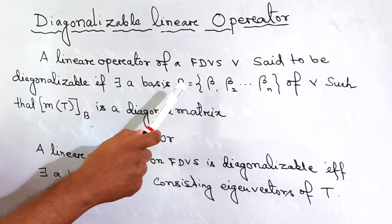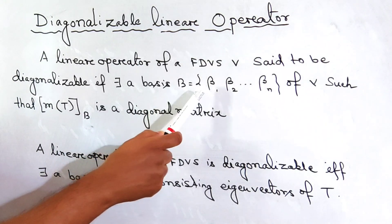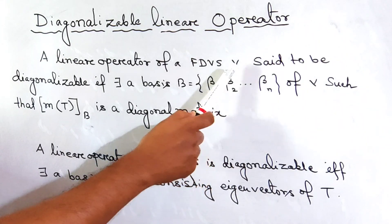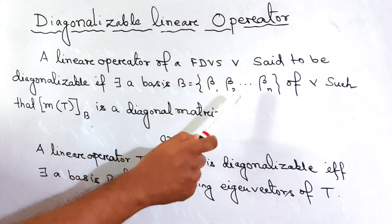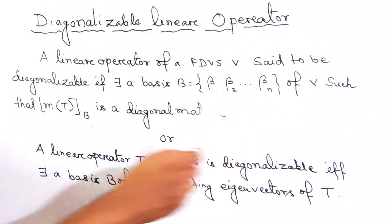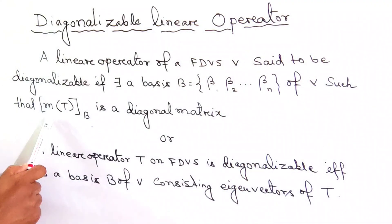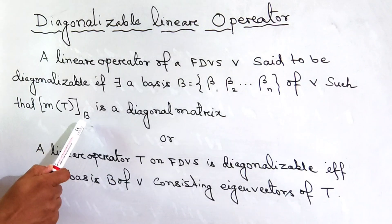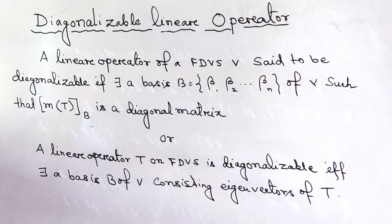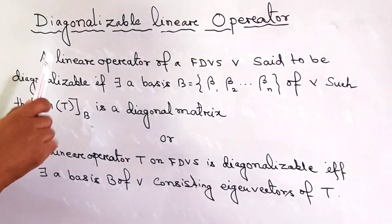This basis consists of vectors β1, β2, ..., βn, meaning the dimension of the vector space V is n, which is finite. Such that the matrix of T with respect to the ordered basis B is a diagonal matrix. Then we say the linear operator T is diagonalizable.